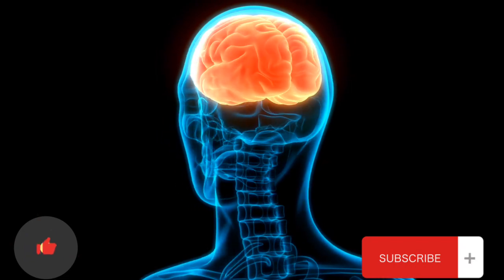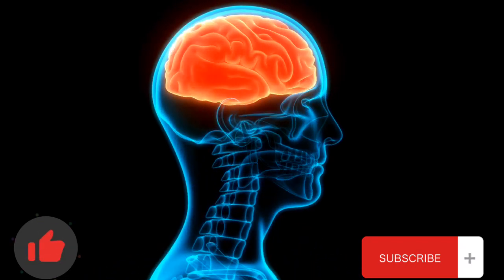Parietal lobe: processes sensory information, including touch and spatial awareness.